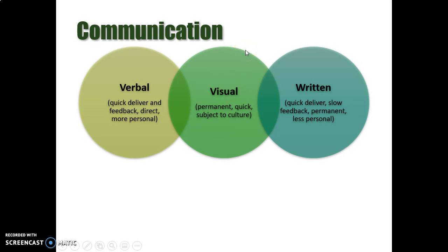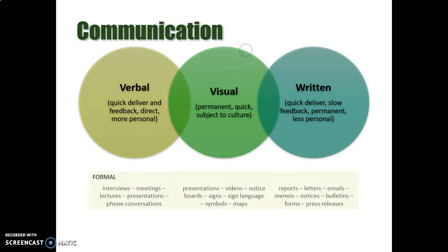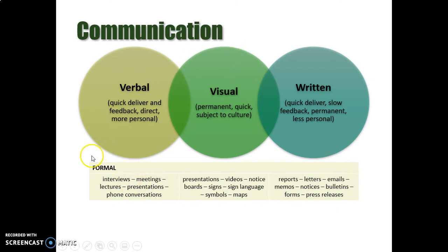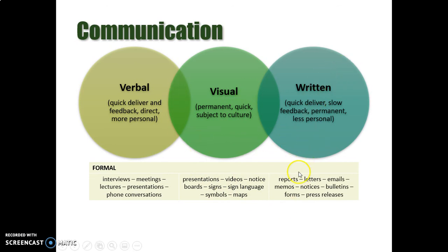Some examples of these types of communication: formal verbal communication can take the form of interviews, meetings, lectures, presentations, and formal conversations. Formal visual communication can include signs, symbols, maps, notice boards or billboards, videos, or presentations with visual representations. Written communication can come as reports, letters, emails, memos, notices, bulletins, forms to fill, or press releases.